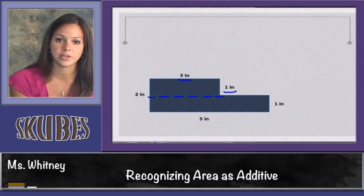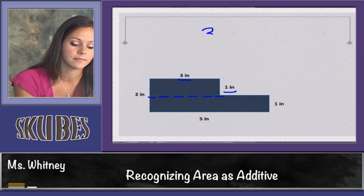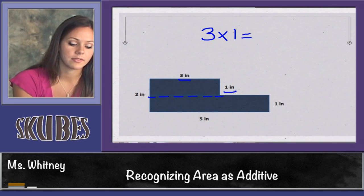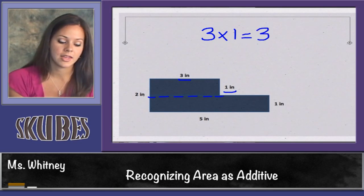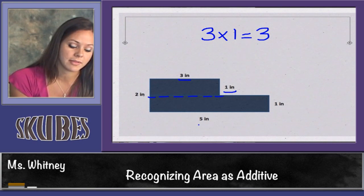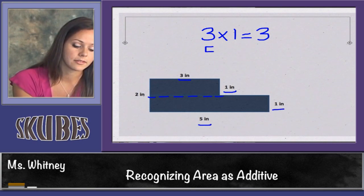To find the area of my second rectangle, I'll multiply 5 times 1 and get 5.